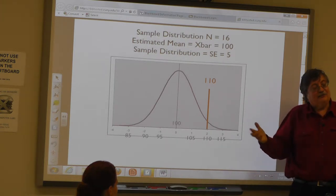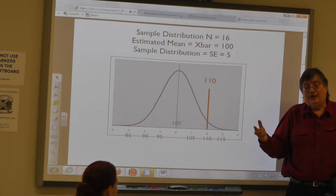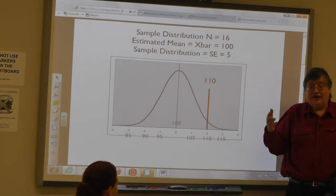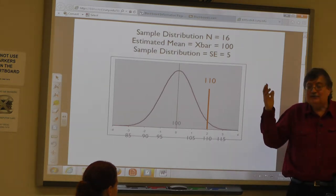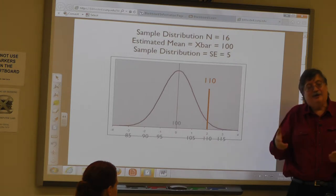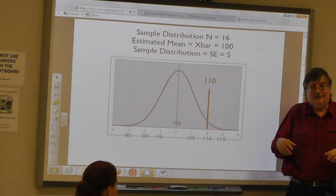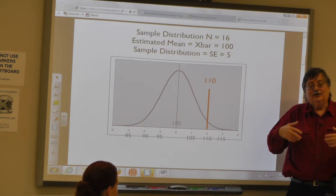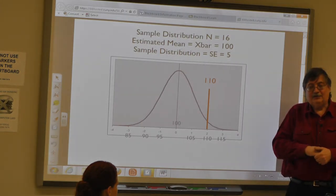The first time somebody tried to replicate that study, they didn't get the same result. They either got lucky or unlucky with the first study — and that happens. One out of 20 times, you're going to get a study that gives you the wrong result — that allows you to say there's a difference when there really isn't.